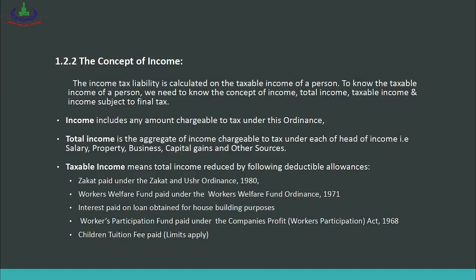The definition of income given in the Income Tax Ordinance 2001 states that income includes any amount — it can be salary, it can be net profit from a business, it can be capital gains. Income has many different forms, as further clarified in the ordinance. Total income is the aggregate of income chargeable to tax under each head of income. Total income refers to all of a person's income falling under different heads of income. Under the Income Tax Ordinance 2001, five heads of income are specified.